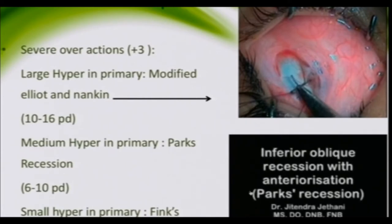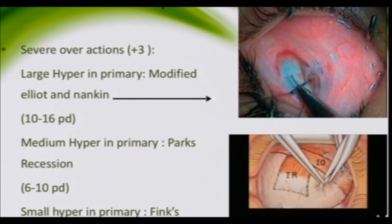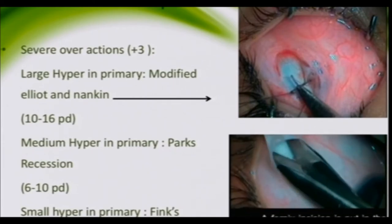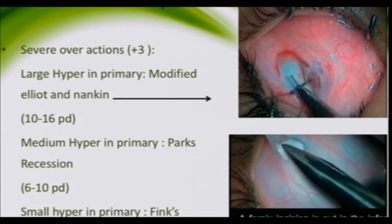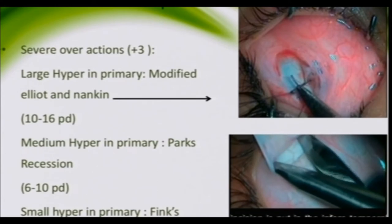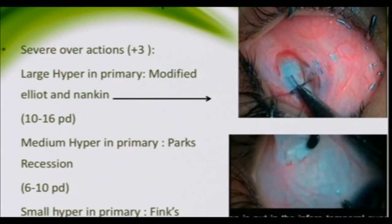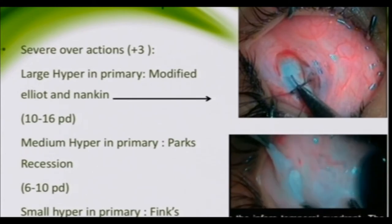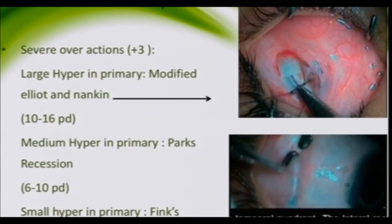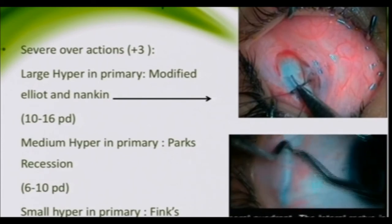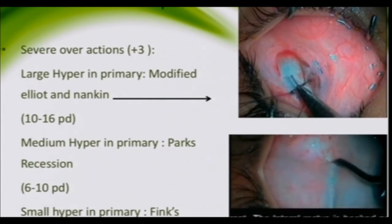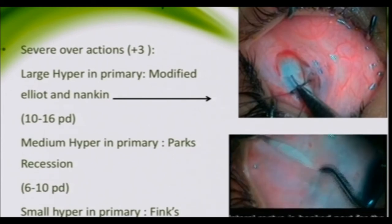Parks recession gives a recession effect of 10 millimeters and also provides a small anteriorization effect. The Parks recession point is 3 millimeters inferior and 2 millimeters temporal to the inferior rectus, on its temporal border. When there is a small hyper deviation in primary position but large overaction, we go for Parks recession.